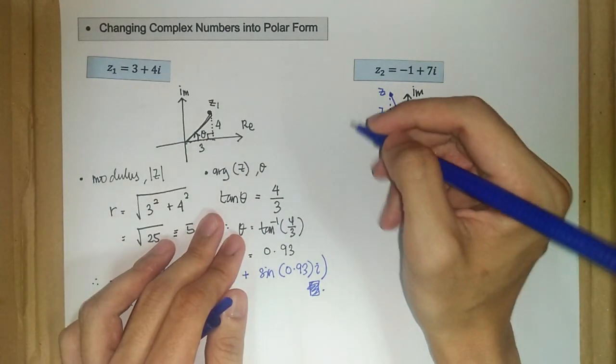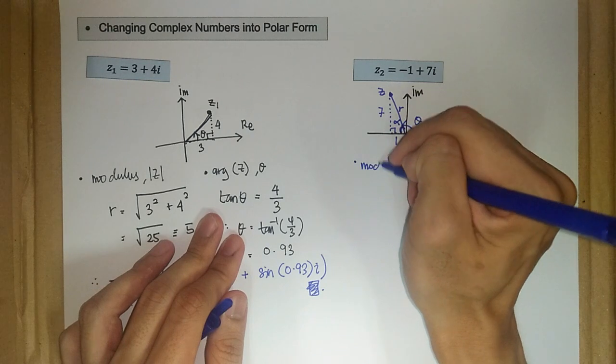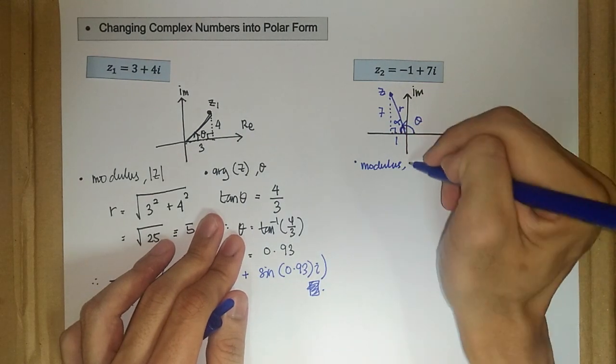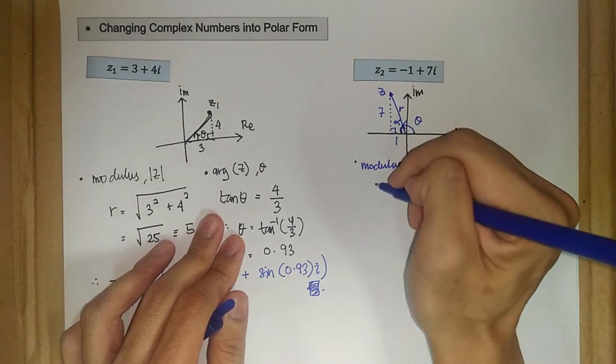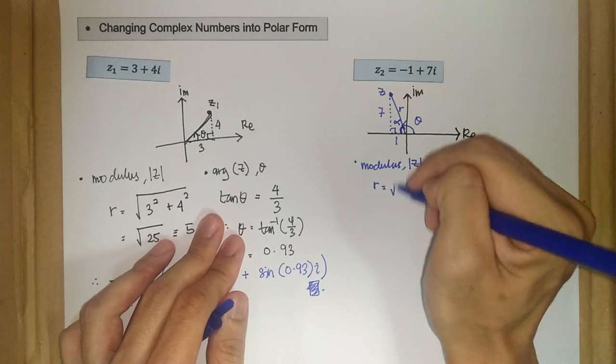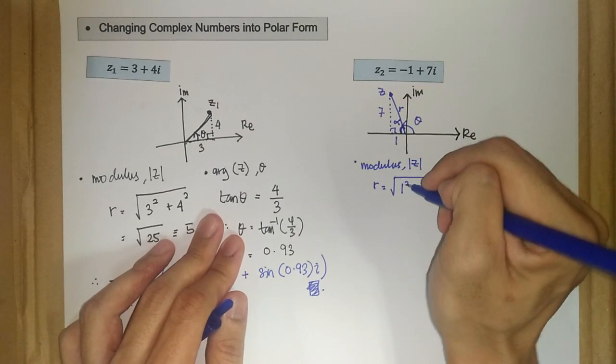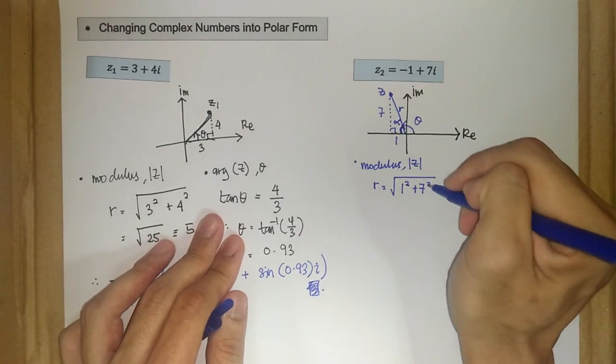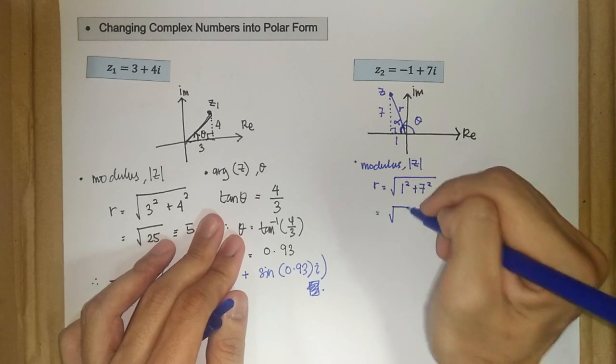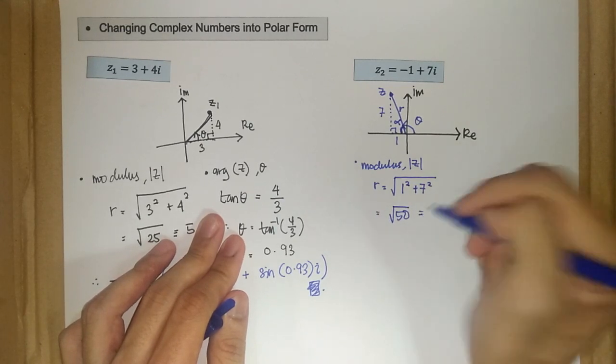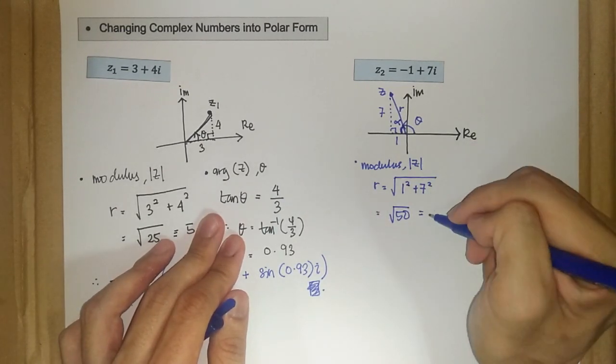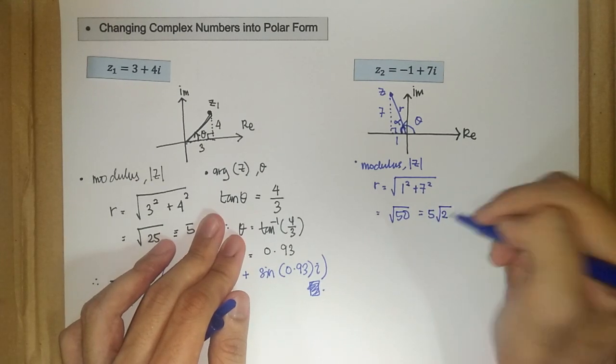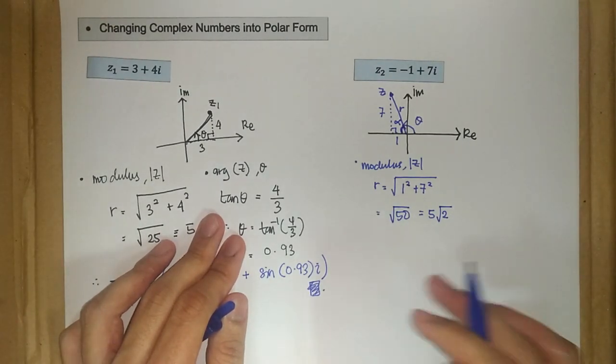So first, the modulus. Let's find the modulus. So r is just the square root of one squared plus seven squared. So we have square root of 50, or five square root of two. All right.